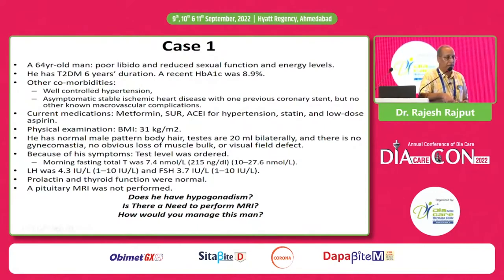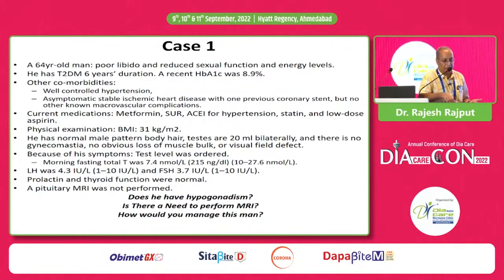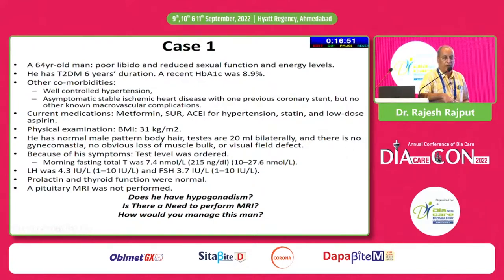Case one: a 64-year-old man presented with poor libido, decreased sexual function, and decreased energy. He is a known case of type 2 diabetes for six years, HbA1c 8.9, with asymptomatic stable ischemic heart disease. Current medications include metformin, sulfonylurea, a statin, and low-dose aspirin. BMI is 31, so he is obese. Normal body hair, testes bilaterally 20 ml, no gynecomastia.